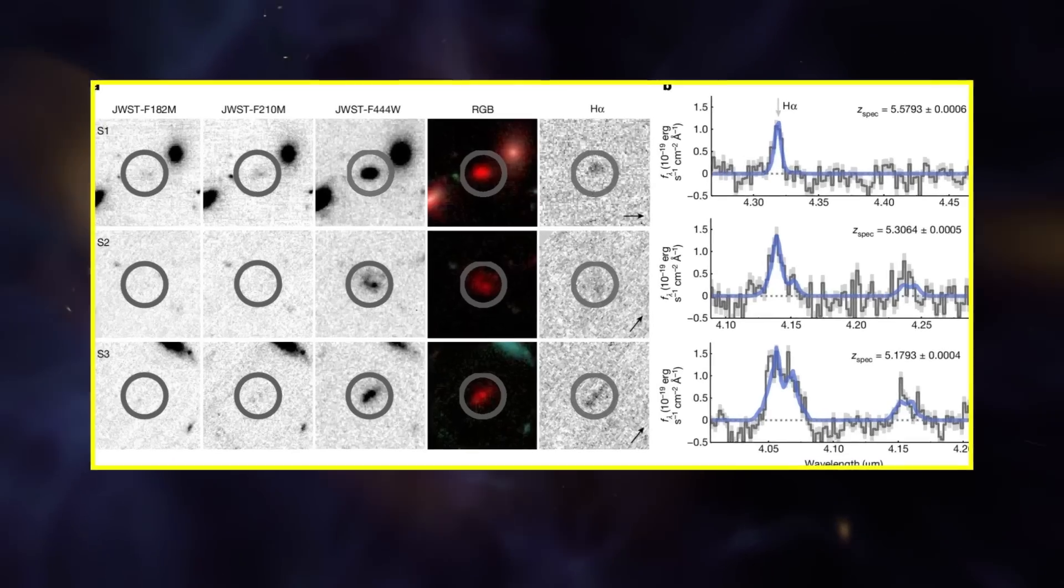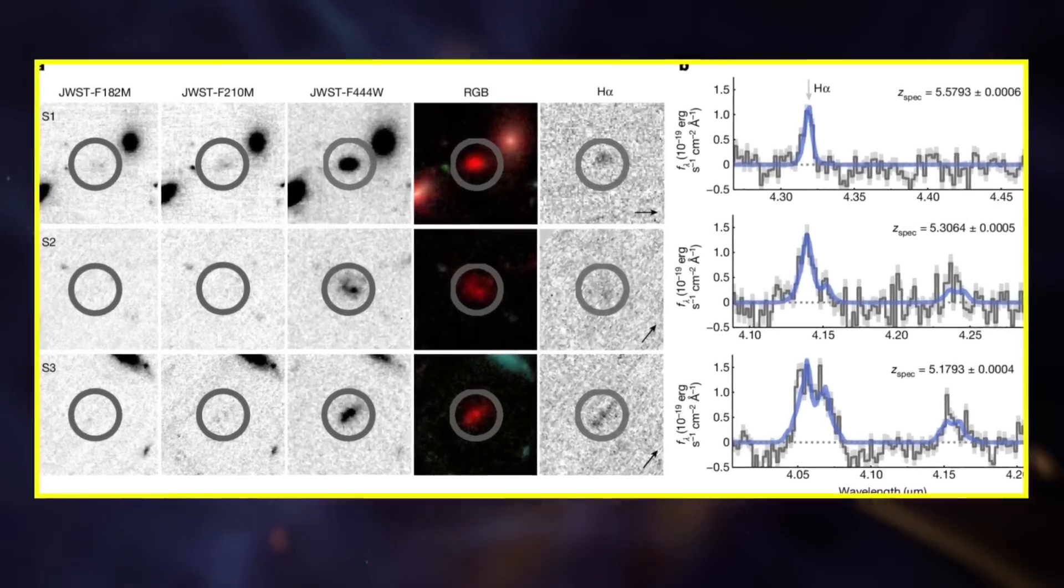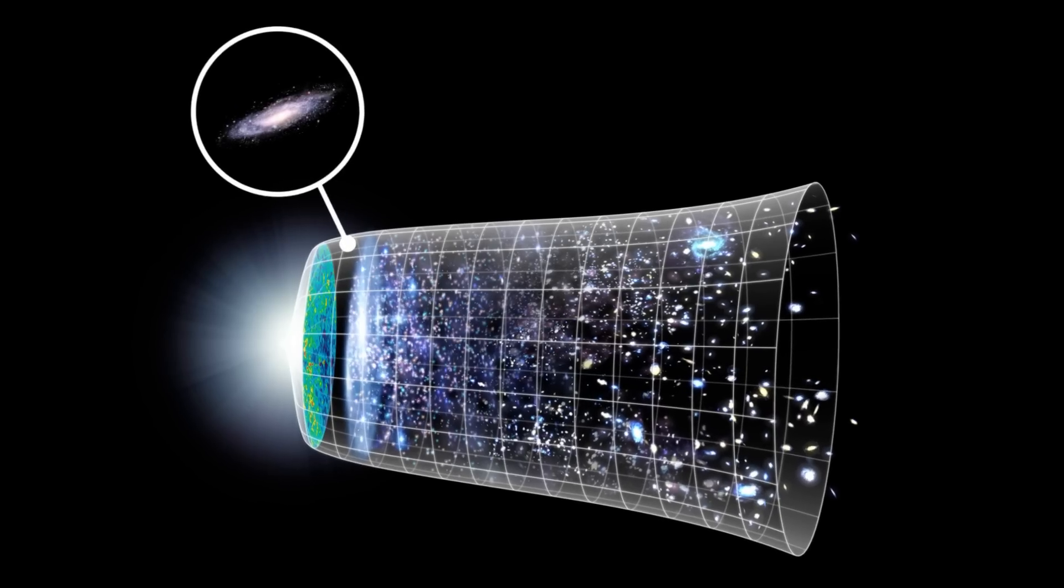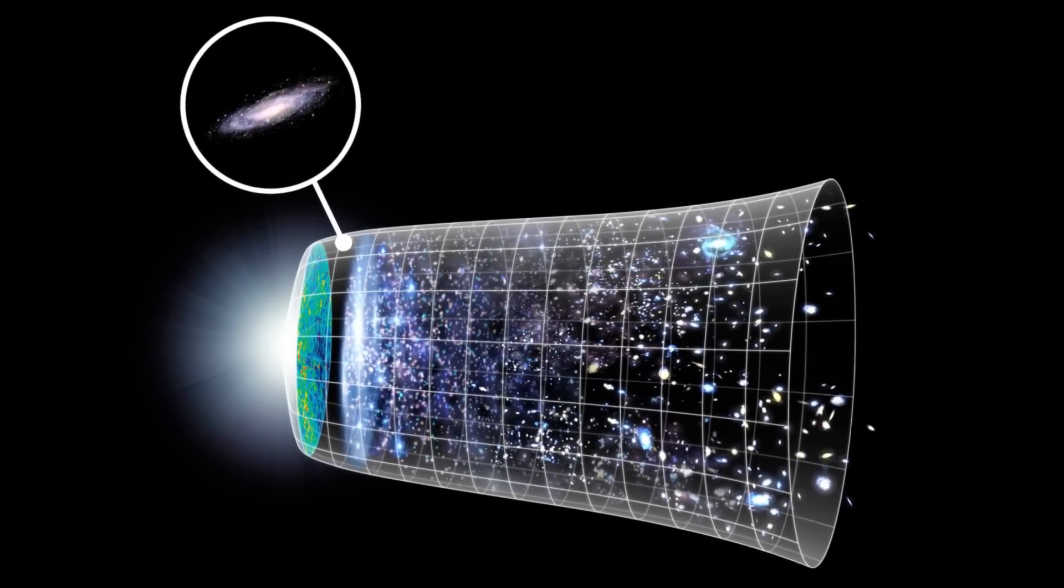An international team, led by the University of Geneva, has identified three ultra-massive galaxies, nearly as massive as the Milky Way, already in place within the first billion years after the Big Bang.